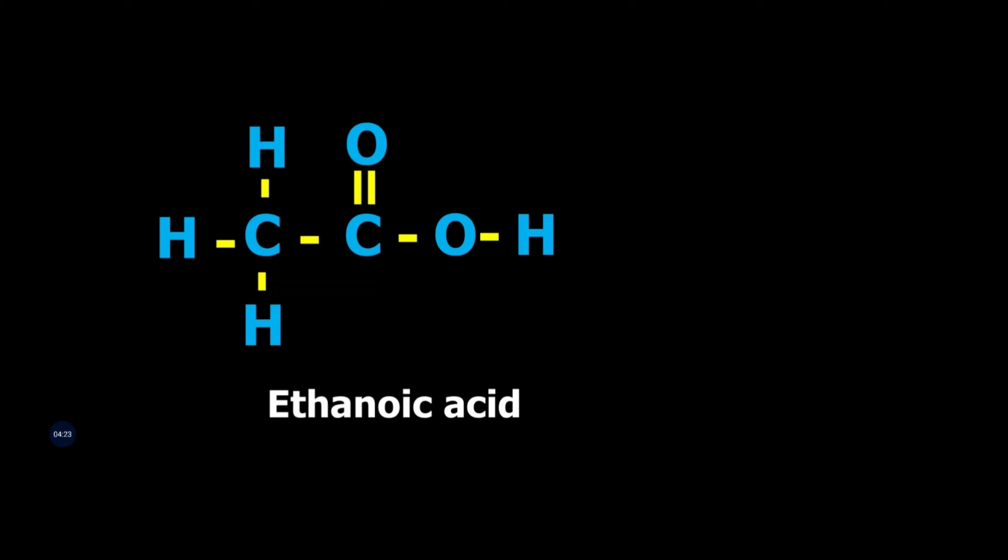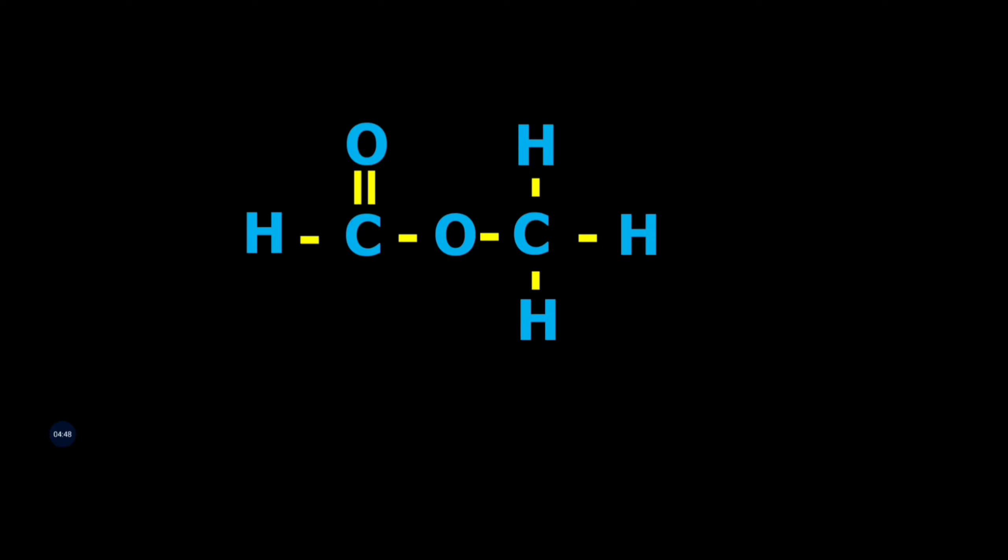We can also make a two carbon ester using the same number of atoms but just rearranging them differently. In the case of an ester, the oxygen is in the middle. It forms a bridge. It is the bridging atom between two carbon atoms. And there we have found the ester methyl formate.